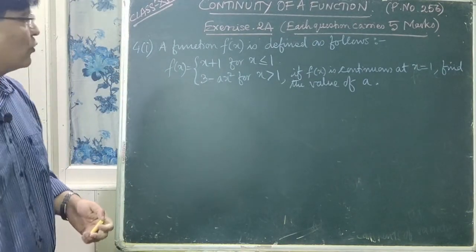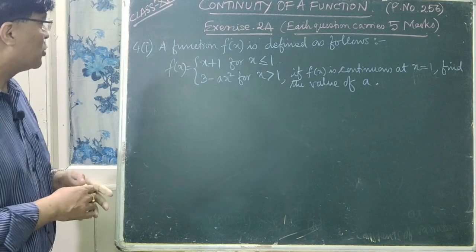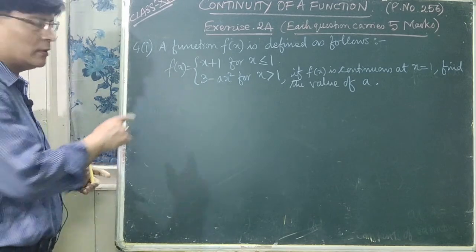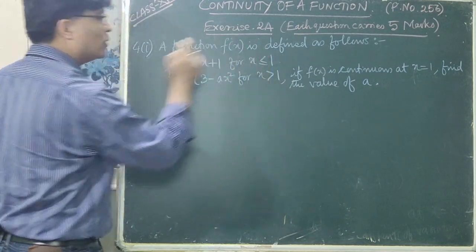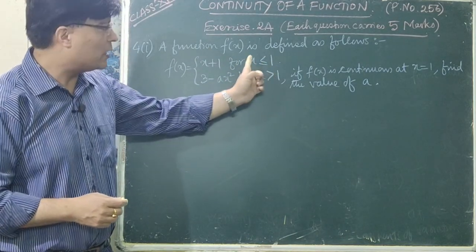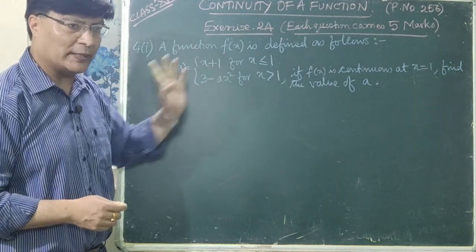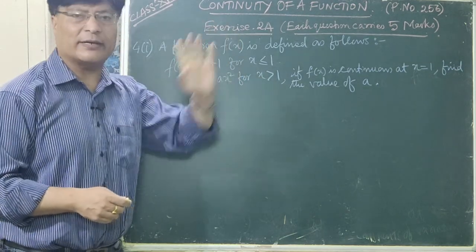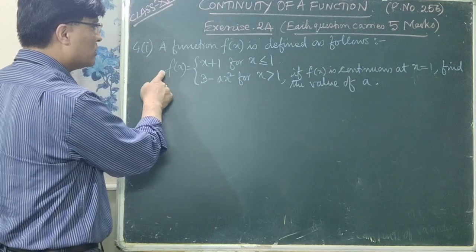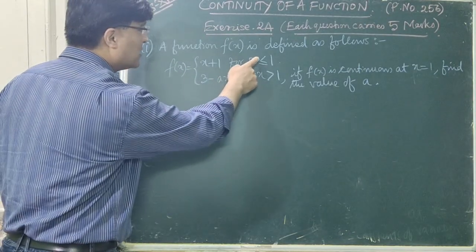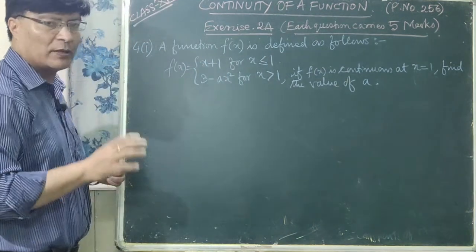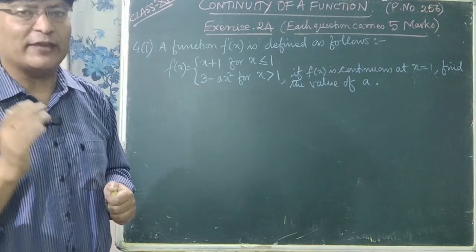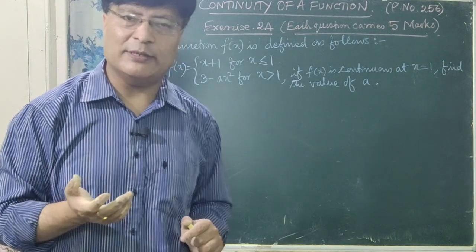Now we do question number 4, part 1. Each question carries 5 marks, Exercise 2A. A function f(x) is defined as: f(x) = x + 1 for x ≤ 1, and f(x) = 3 − ax² for x > 1. For x less than 1 we use f(x) = x + 1, and for x greater than 1 we use f(x) = 3 − ax². Since different functions are used, we need to find separate right hand limit and left hand limit.